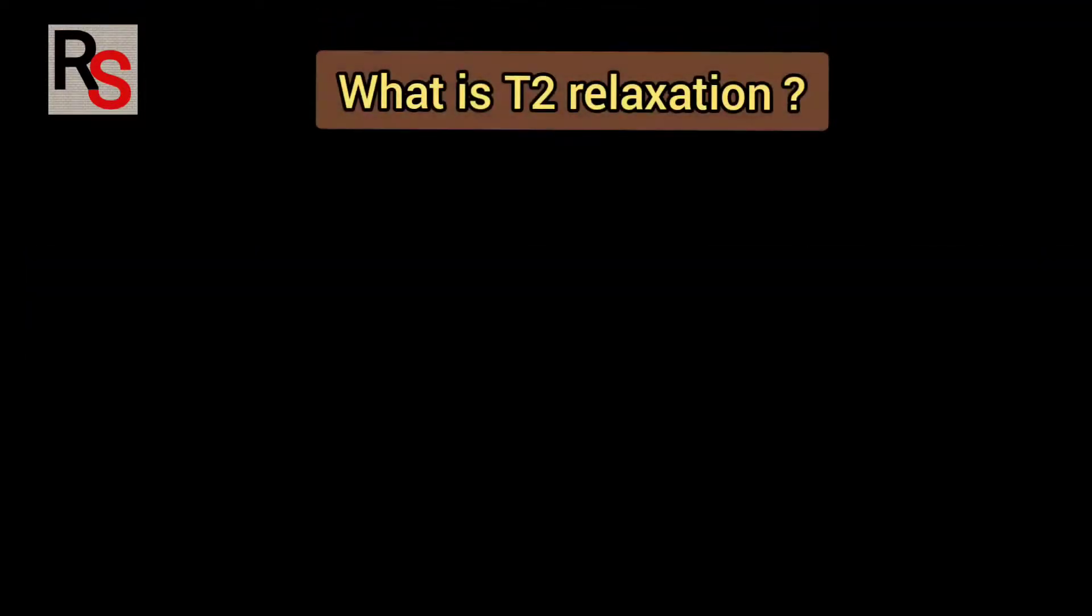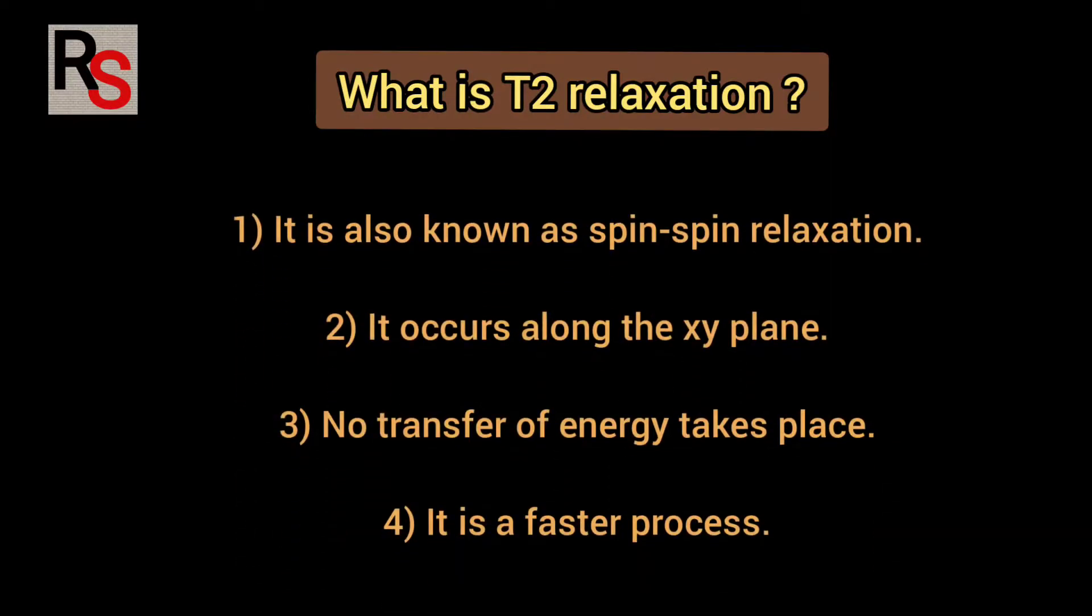What is T2 relaxation? It is also known as spin-spin relaxation. It occurs along the XY plane. No transfer of energy takes place here. It is a faster process.